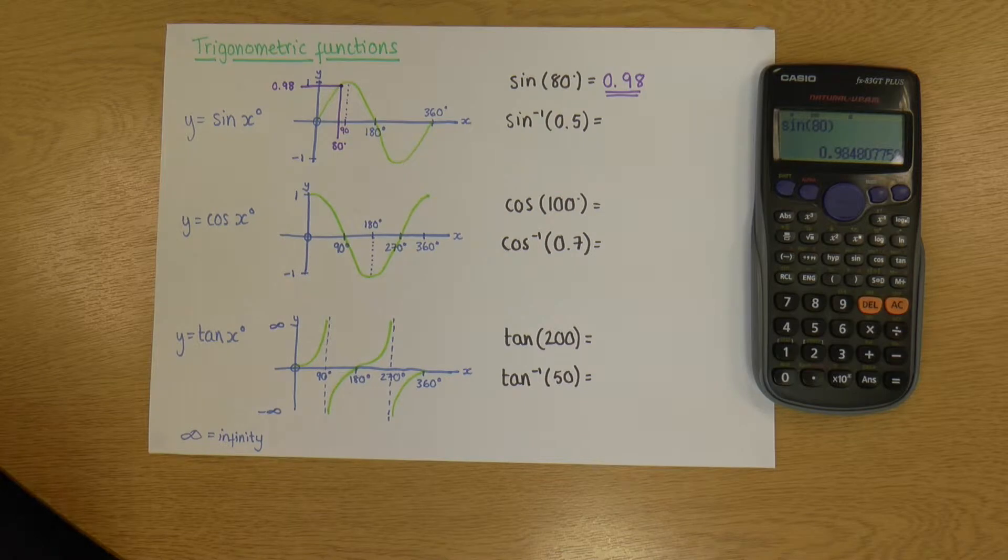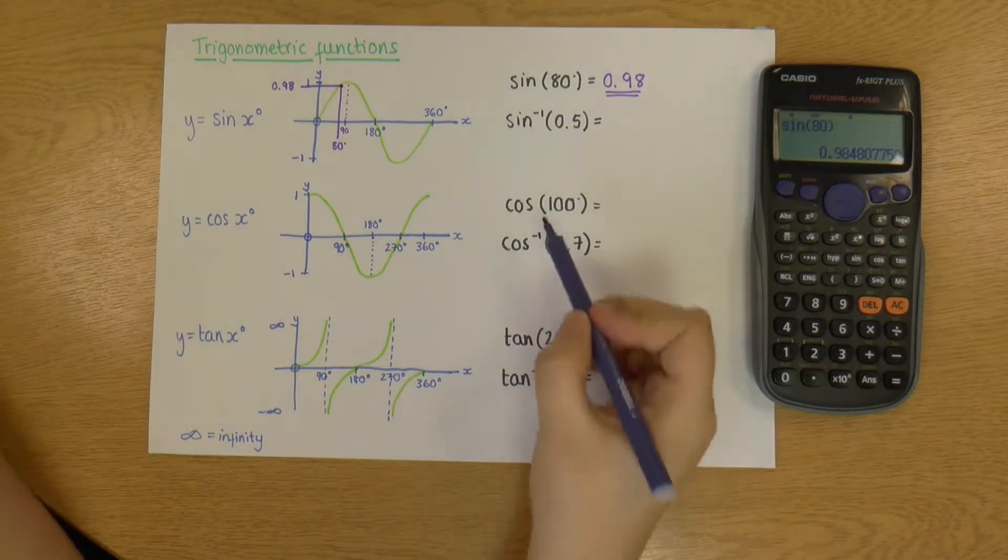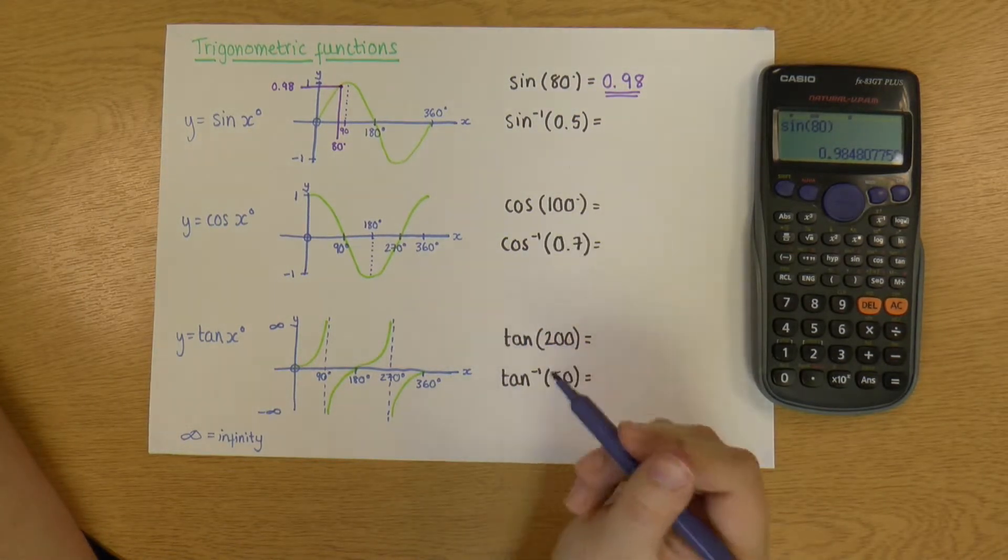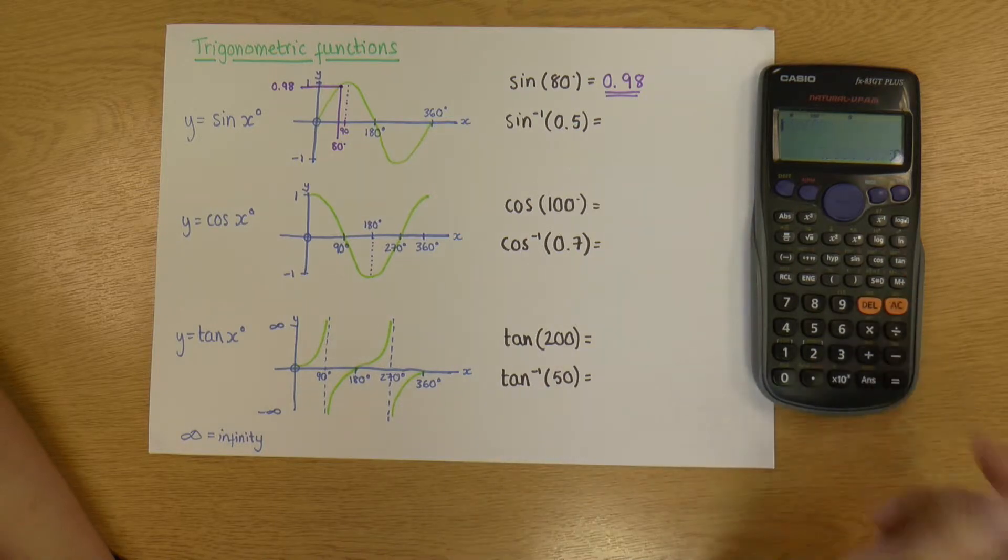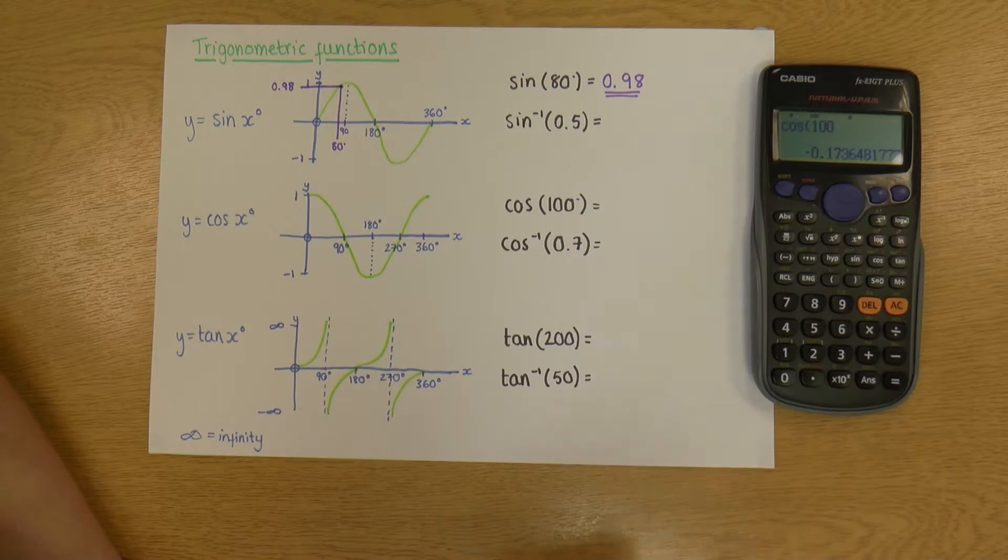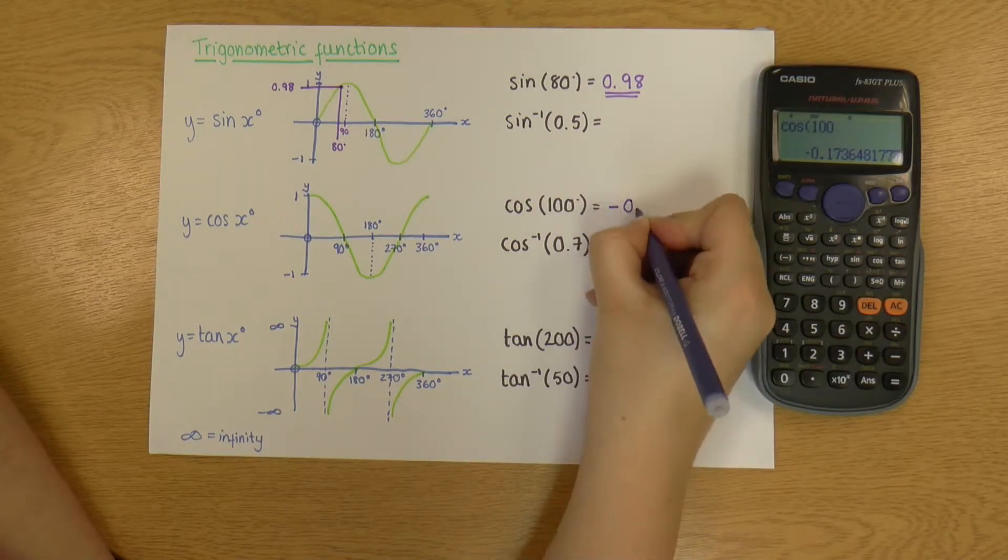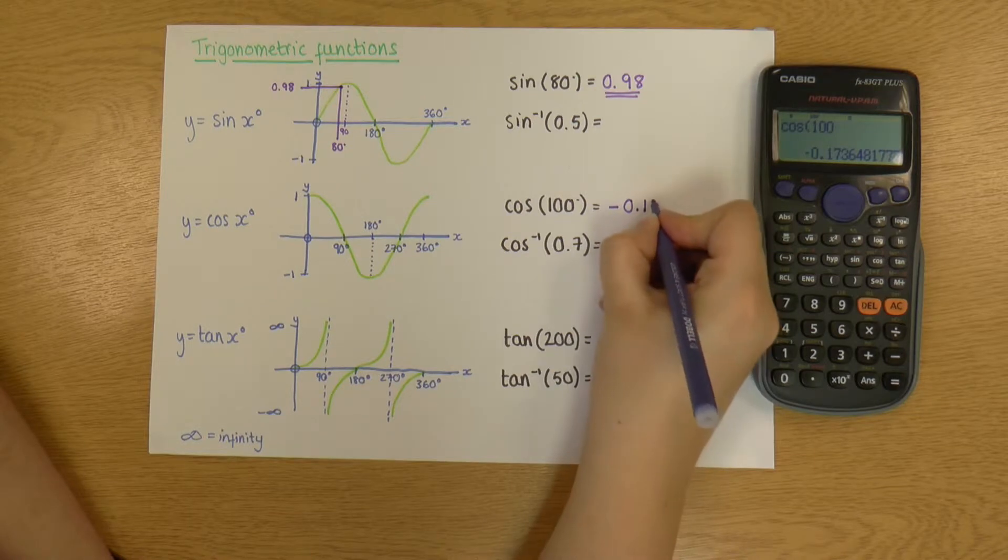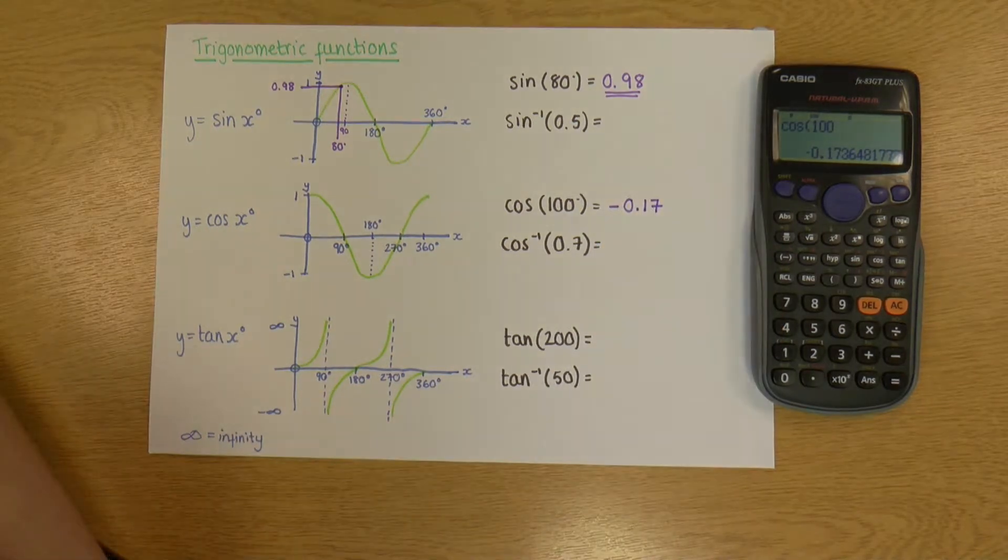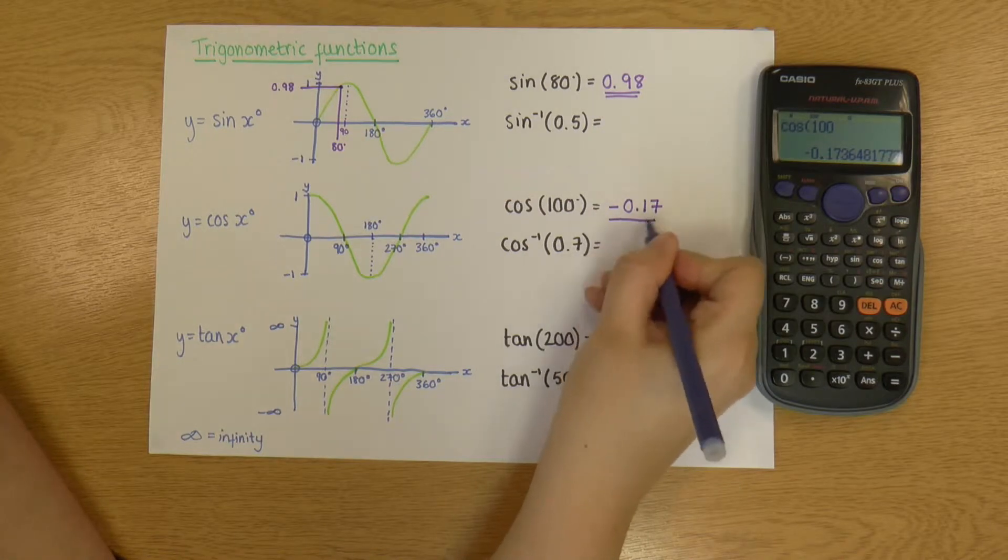I'm going to come back to the minus one after I do the others. So let's have a go at cos 100. So we're looking at the same thing. We can pop it into a calculator. Cos 100. And that is giving me minus 0.17. So a bit odd that this is a minus, isn't it? Well, actually, no, it isn't.